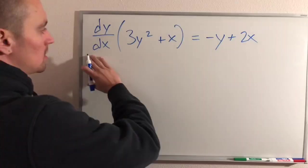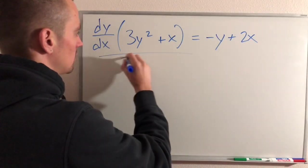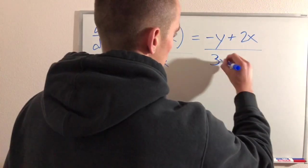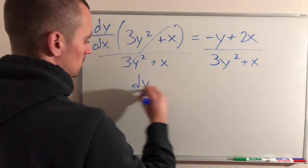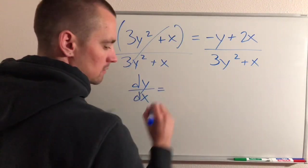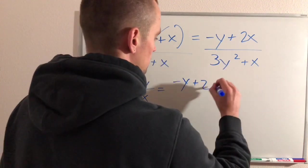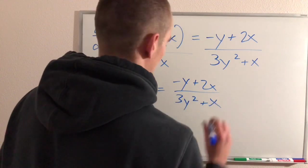Then, to get the dy/dx by itself, all we have to do is divide by 3y² + x. So dy/dx equals (-y + 2x) / (3y² + x).